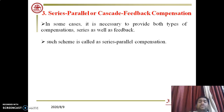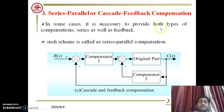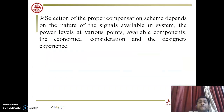In some cases, it is necessary to provide both types of compensation — series as well as feedback. For complicated control systems requiring refined gain adjustment, a series-parallel combination is used. Compensator 1 is connected in the feed-forward path (series compensator) and Compensator 2 is connected inside the inner feedback loop (feedback compensator). Both compensators together access the gain of the original part to achieve stability limits.